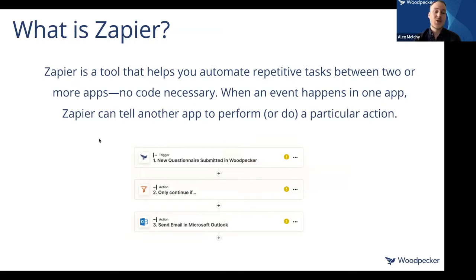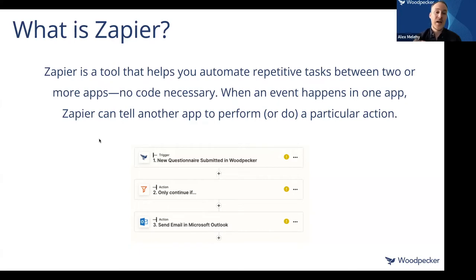Zapier is effectively a tool that helps you automate repetitive tasks between two or more applications without having to write any code. It's basically a drag-and-drop interface that allows you to specify automated workflows, such that you can say when some event happens in one of my apps, Zapier can then tell another application to perform a particular action. I could have one trigger event — always the first step in a Zap, which is what Zapier calls an automated workflow — and then as many subsequent actions as needed.